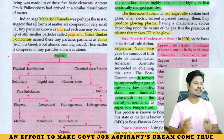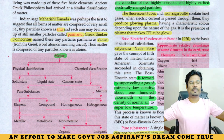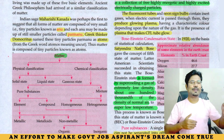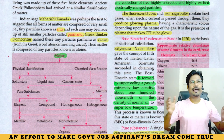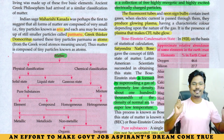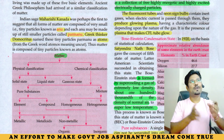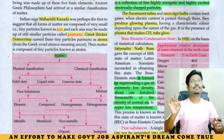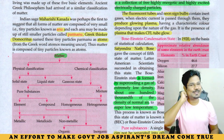So to revise: matter has two classifications — physical and chemical. Physical gives solid, liquid, and gaseous states. Chemical gives pure substances and mixtures. Pure substances include elements and compounds; compounds are organic or inorganic; elements are metals, non-metals, and metalloids. Mixtures are homogeneous or heterogeneous.